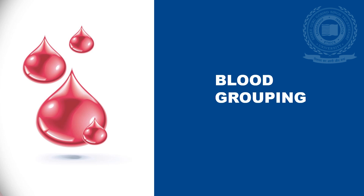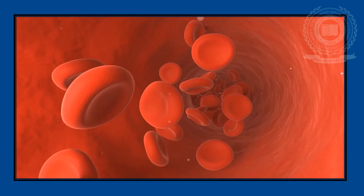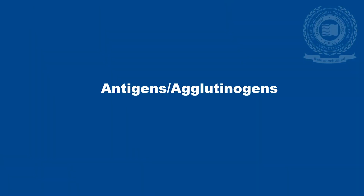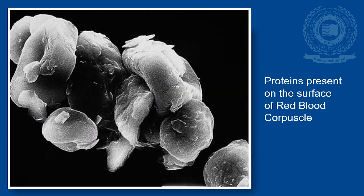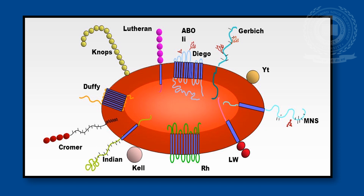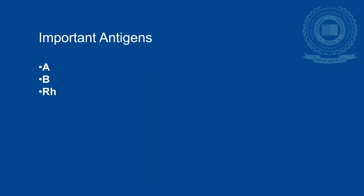Blood grouping is all related to only one type of blood cell, that is red blood corpuscle. Let us know about antigens. They are also called as aglutinogens. These are basically the proteins present on the surface of red blood corpuscle. There are more than 400 antigens known till date, and on this basis there are more than 30 blood groups known too. But the important antigens are A, B, and Rh.